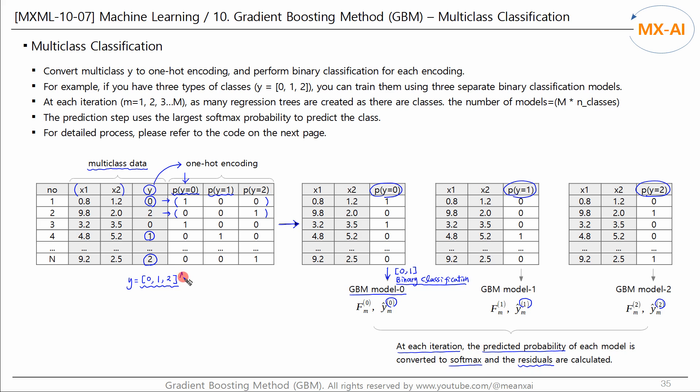In this way, if the number of classes is 3, then 3 models are also created. And in the next iteration, another 3 models are created. The total number of models generated is the number of iterations M multiplied by the number of classes.